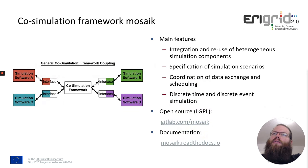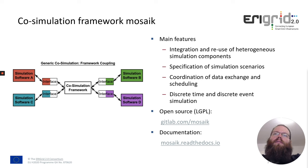As already explained in the first part, co-simulation aims to integrate and reuse heterogeneous simulation components. The idea is that when we want to do a simulation of different domains together, we don't want to reimplement already existing simulation models, but we would like to reuse already existing established tools which are usually used in the domains and integrate them in a new simulation.